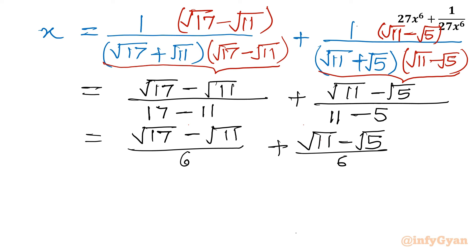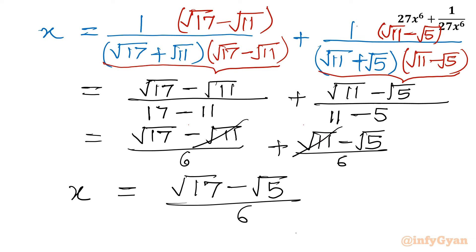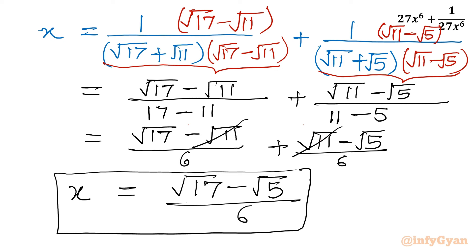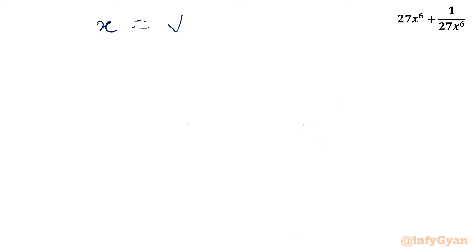Once I add, I can cancel the plus and minus signs. So x finally we are getting root 17 minus root 5, divided by 6. Now we have to target how to evaluate our expression, so let's figure it out. So x equals (root 17 minus root 5) divided by 6.